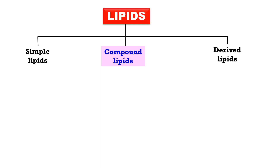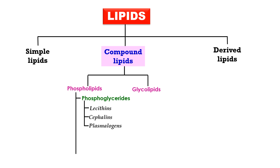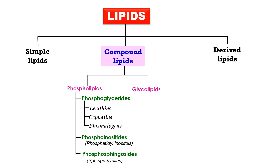Compound lipids are divided into phospholipids and glycolipids. Phospholipids include phosphoglycerides, which include the lecithins, cephalins, and plasmogens. Another category is phosphoinositides and phosphosphingolipids. Glycolipids include cerebrosides, gangliosides, and sulfolipids.